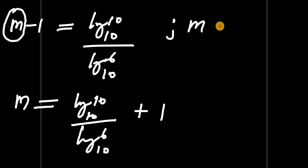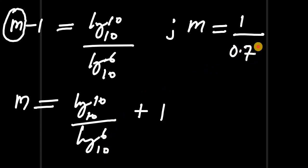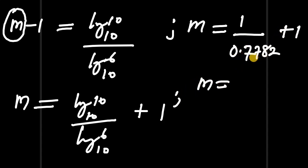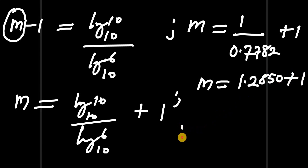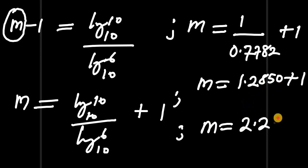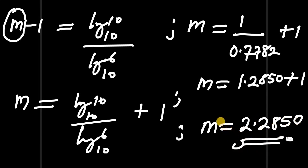So m equals log of 10 to the base 10, which is 1, divided by log of 6 to the base 10, which is approximately 0.7782 to four decimal places, plus 1. So m equals 1 divided by 0.7782, which is approximately 1.2850, plus 1, giving us approximately 2.2850 to four decimal places.